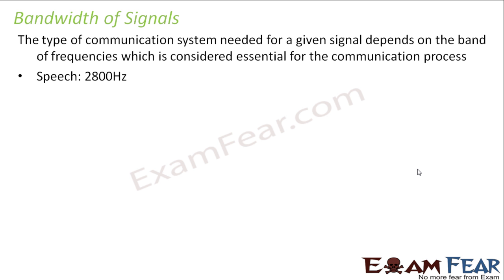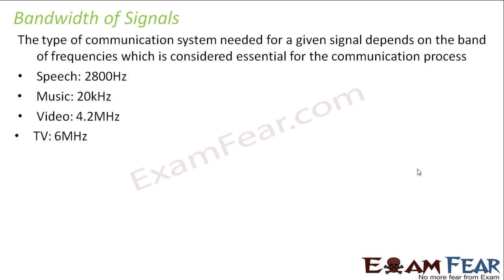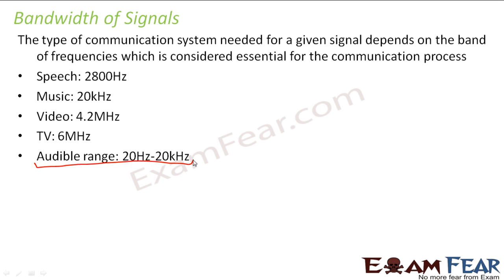For speech signals, the bandwidth falls around 2800 Hz. For music, it is 20 kHz. For video, it is 4.2 MHz. For TV, it is 6 MHz. All of these fall within the audible range of frequency for a human ear, which is 20 Hz to 20 kHz. Any frequency within this range is audible to a human being; anything outside this range we cannot hear. So speech, audio, and music all fall within this range, and that is why we can hear them. It is very important to know the range of frequencies of a signal so that we can construct a communication system accordingly.